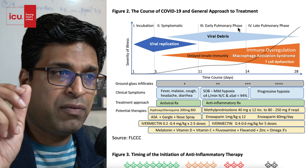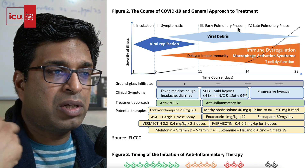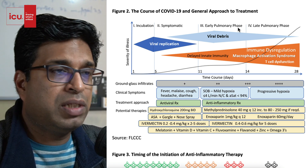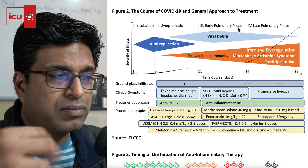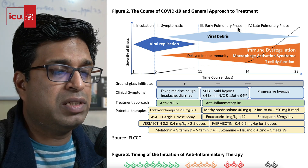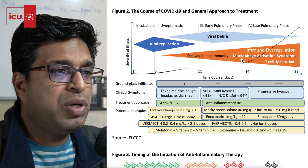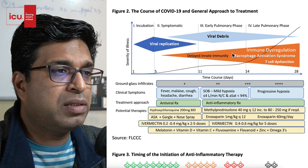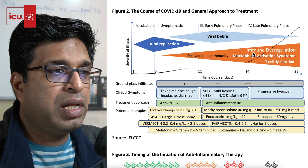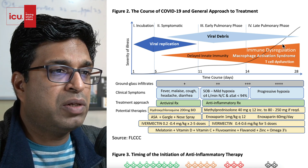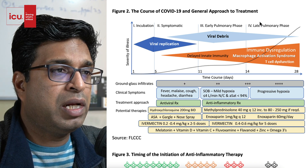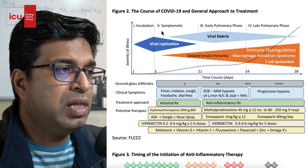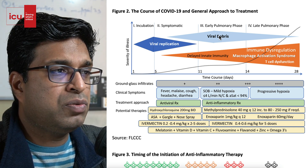It may happen that the patient gets treated and symptoms stop at the symptomatic stage. But if not, it enters the third stage — the early pulmonary phase — where respiratory symptoms increase, cough worsens, there can be mild hypoxia, and CT scans start showing chest infiltrates. If immunity becomes deranged or out of control from here, it gets dysregulated — immune dysregulation happens — and it enters the late pulmonary phase.